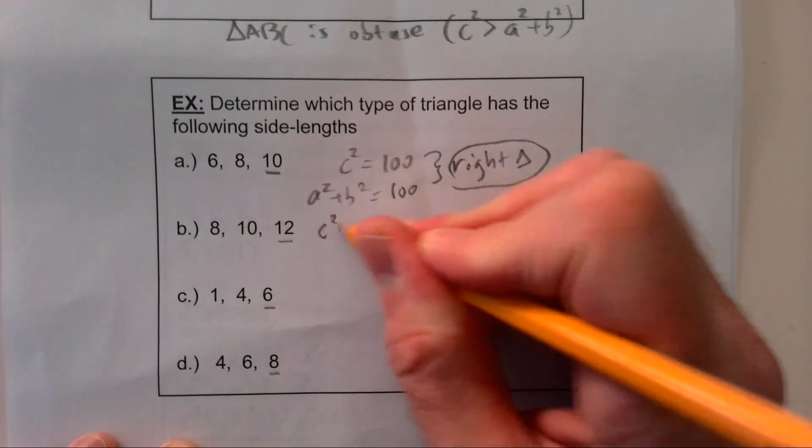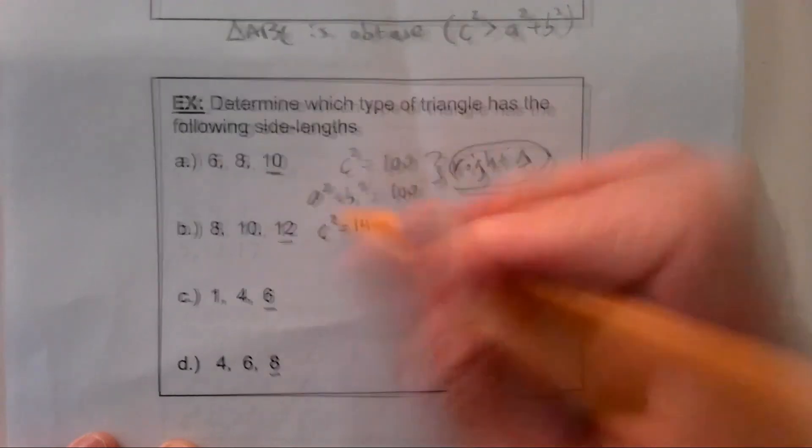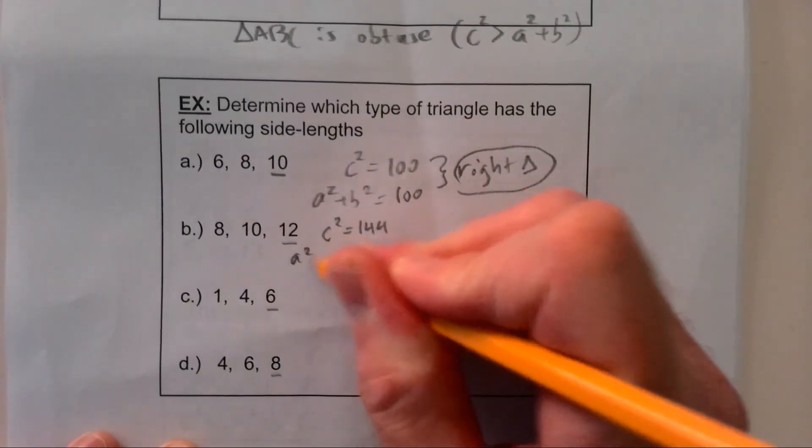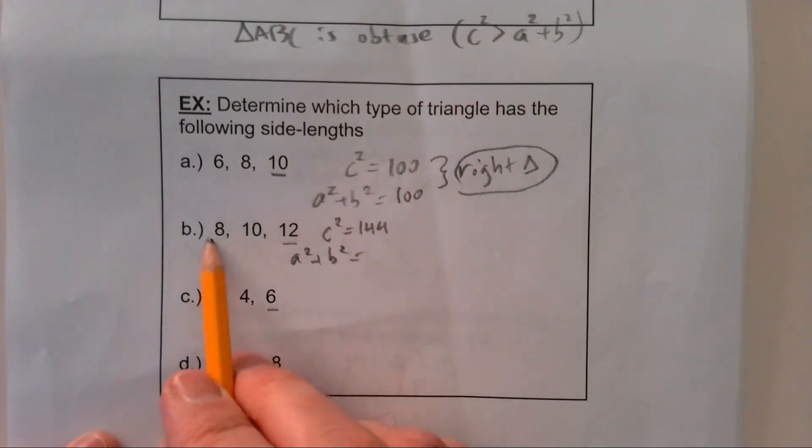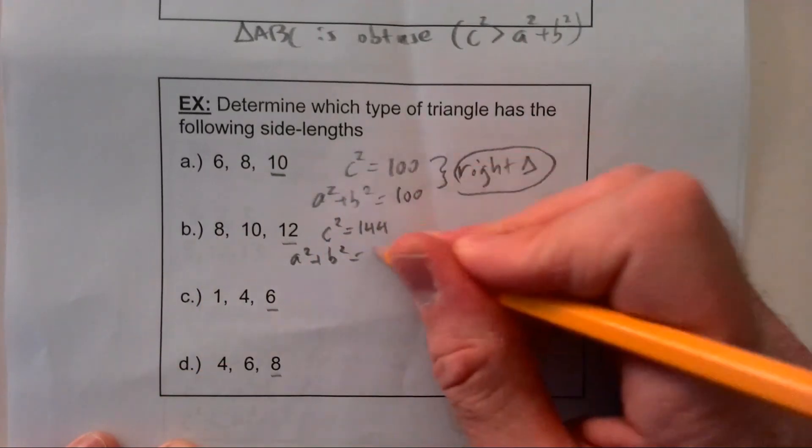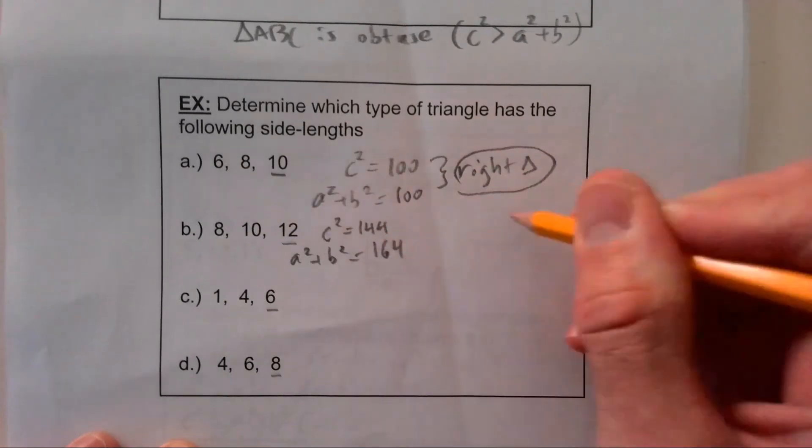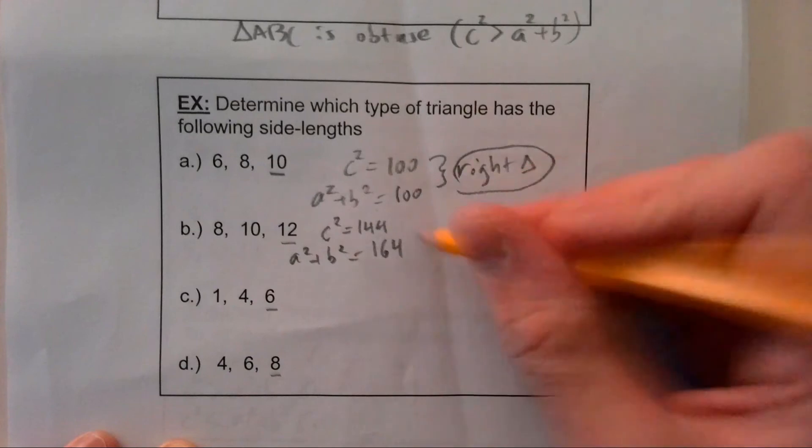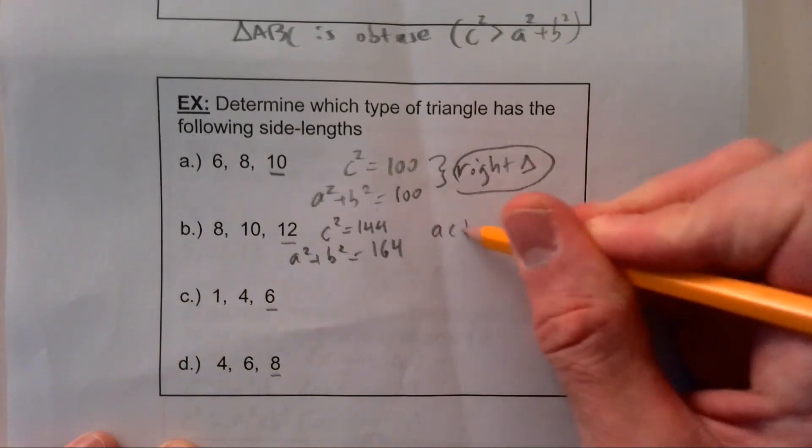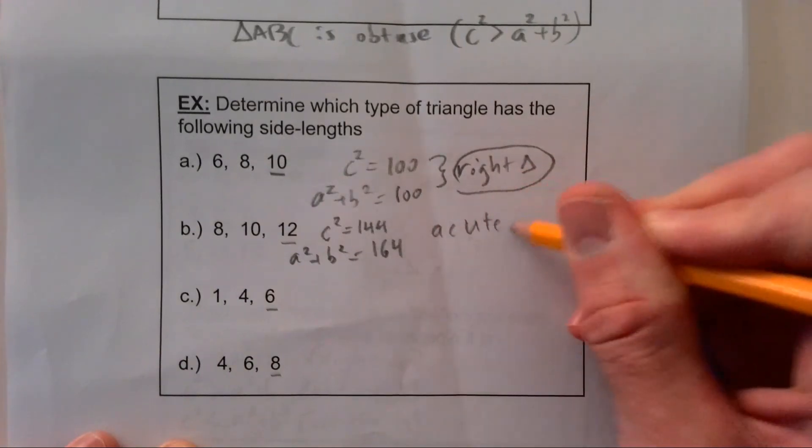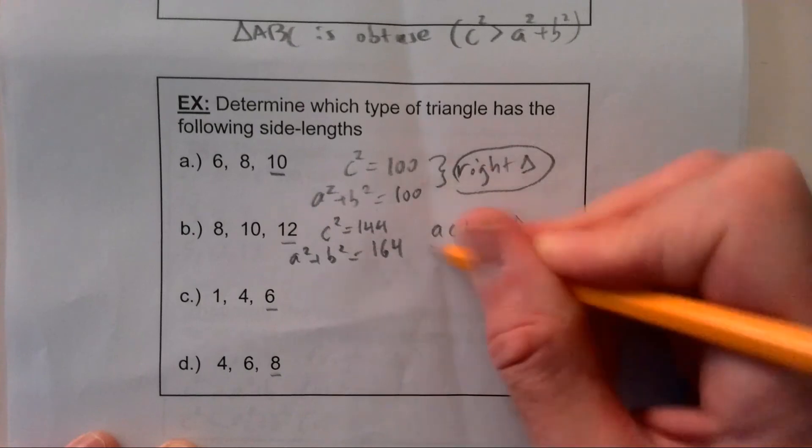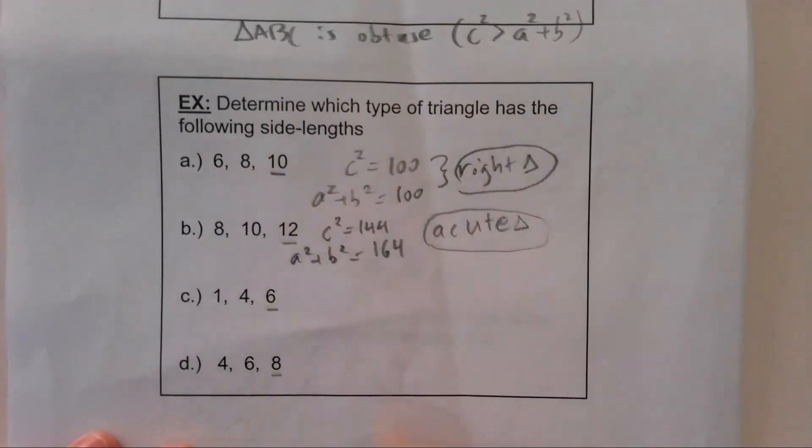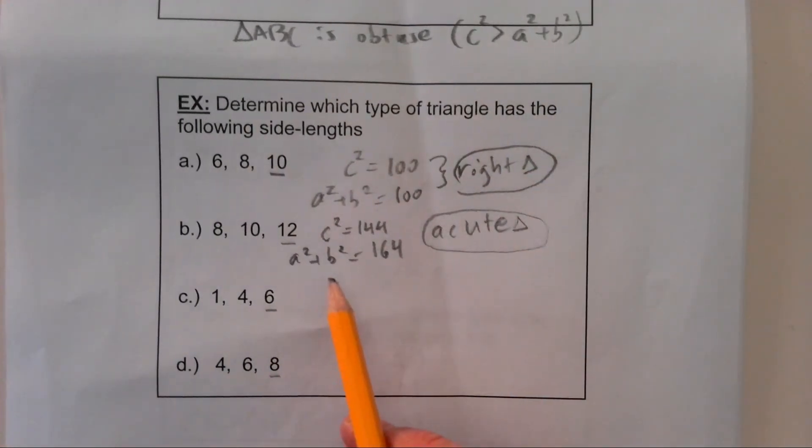C squared is 144. A squared plus b squared, that's 64 and 100, so 164. Here c squared is smaller, so that means that this would be an acute triangle. Because if c squared is less than, it's acute. If it's greater, it will be obtuse, and if they're the same, it's a right triangle.